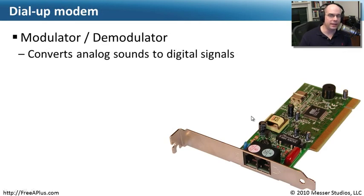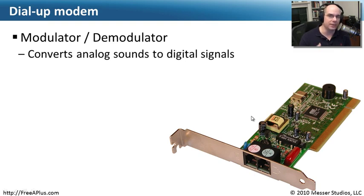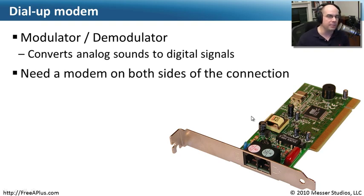One of the oldest ways of communicating between devices is over a phone line using something called a dial-up modem. Modem is an abbreviation for modulator demodulator. It takes the digital signals inside your computer, converts them to analog — something we can hear with our ears — and sends them out over a phone line, where on the other side another modem answers and converts that analog signal back into digital.